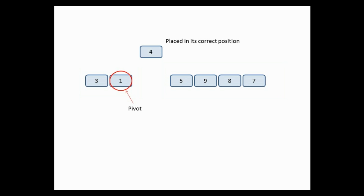Starting from the left sub-list, we take the last element as pivot. P and I are placed at the first element as before. Then 3 is compared with the pivot 1: is 3 less than 1? No. That is the end of the iteration. At the end, we simply swap the pivot with the element at position P, so 1 goes to the first position and 3 goes after it.